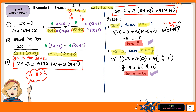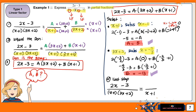The last step is to write the answer back in the original equation form. We have (2x minus 3) over (x plus 1)(3x plus 2) equal to 5 over (x plus 1) plus (-13) over (3x plus 2). The value will not always be positive — it depends on our calculation.